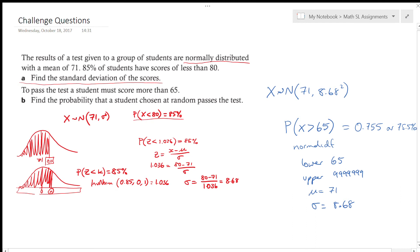Which is probably what we thought, because 65 is going to be less than this, so that's quite a good chunk of students are going to get more than 65.